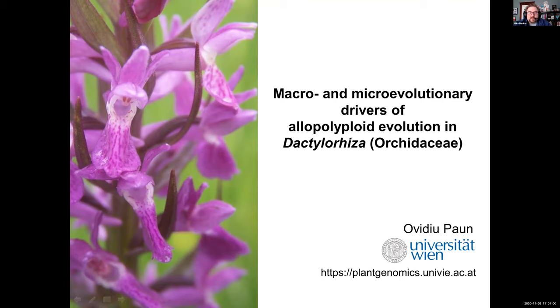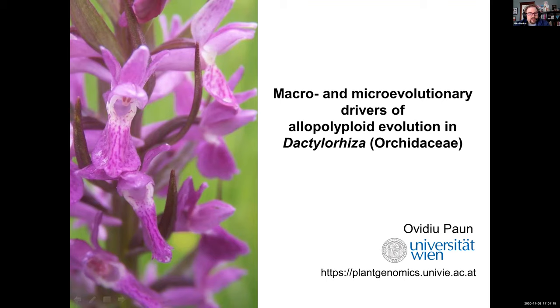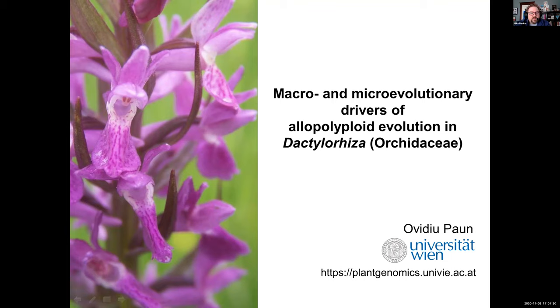Up first this morning is Dr. Ovidiu Paun, an associate professor at the University of Vienna and a group leader in plant ecological genomics. He received his PhD at the University of Vienna, working with Elvira Hörandl and Todd Stuessy on evolution of apomixis in the Ranunculus casuisticus group, and has been at the University of Vienna for quite a few years, starting as a group leader in 2010, as an assistant professor in 2015, and as an associate professor starting last year.